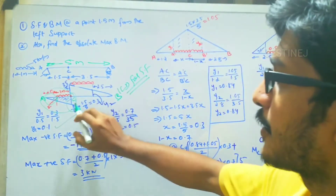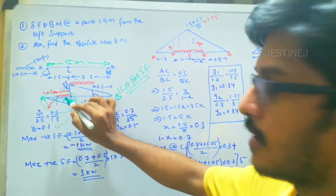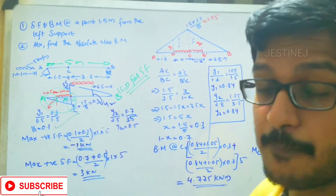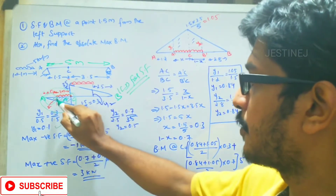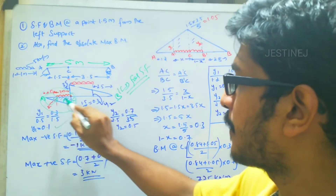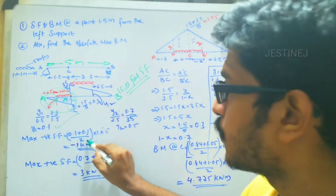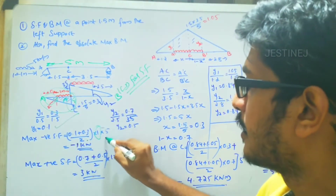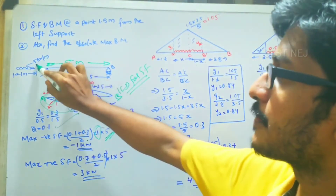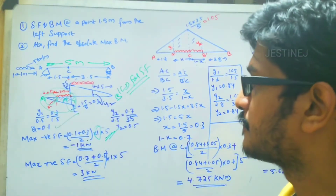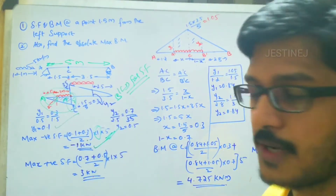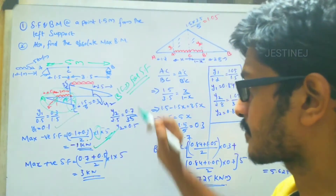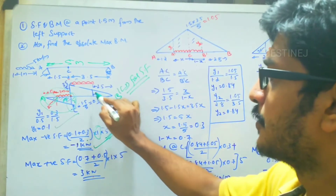The area under this UDL on the ILD is in a trapezium shape. The maximum negative shear force is: (0.1 + 0.3) / 2 multiplied by the span distance of 1, then multiplied by the magnitude of the UDL (5 kilo Newton per meter), giving minus 1 kilo Newton as the maximum negative shear force.